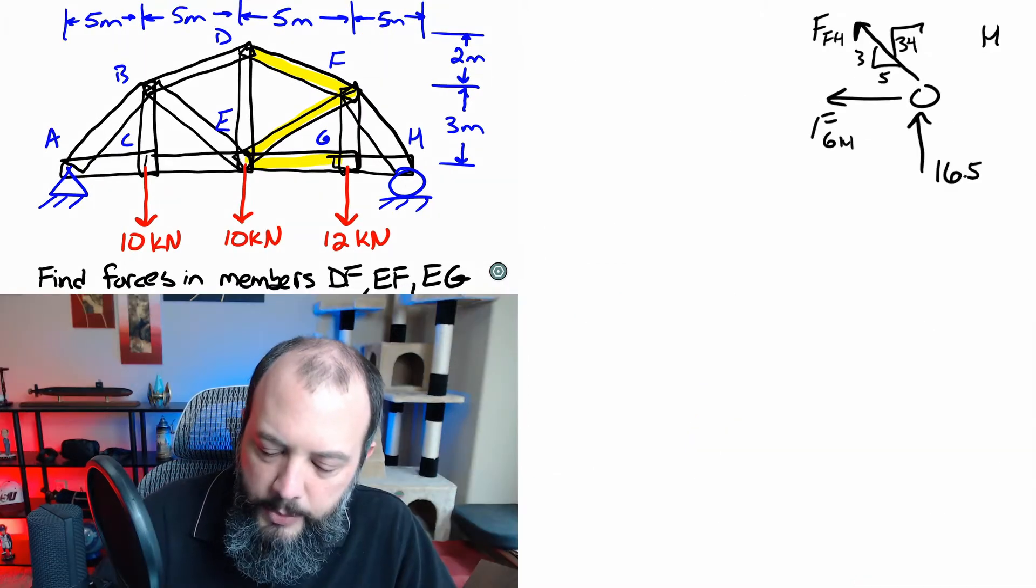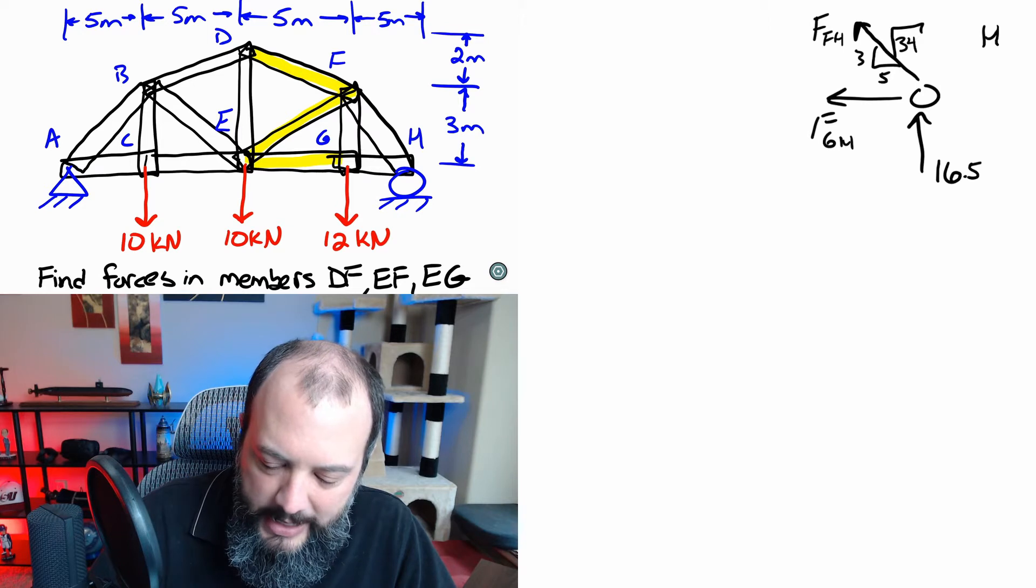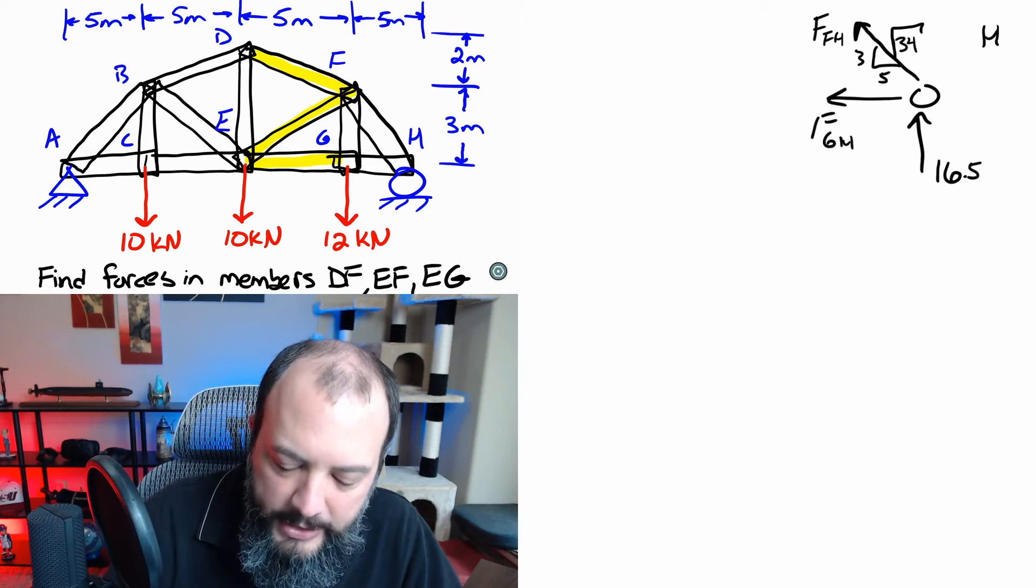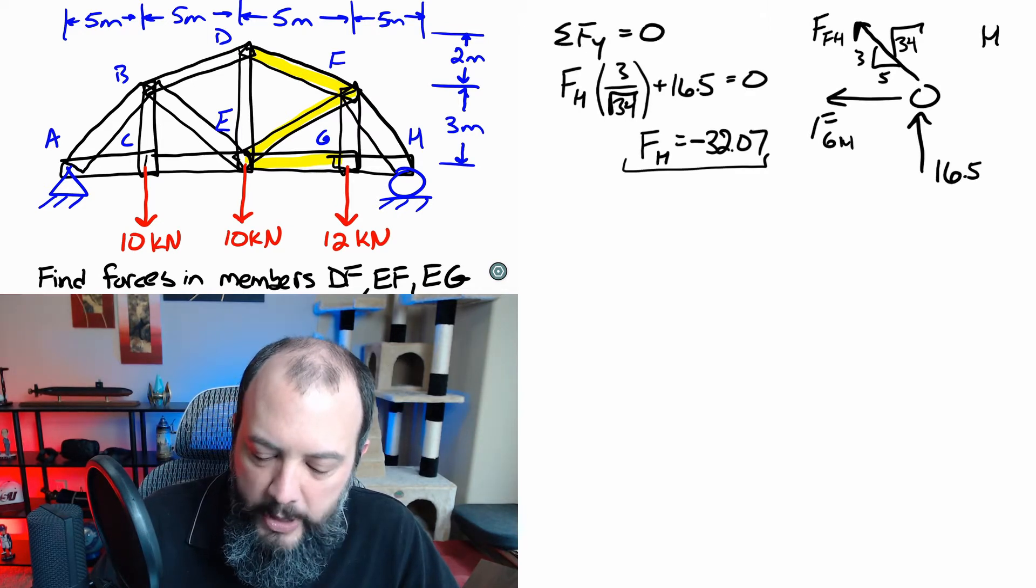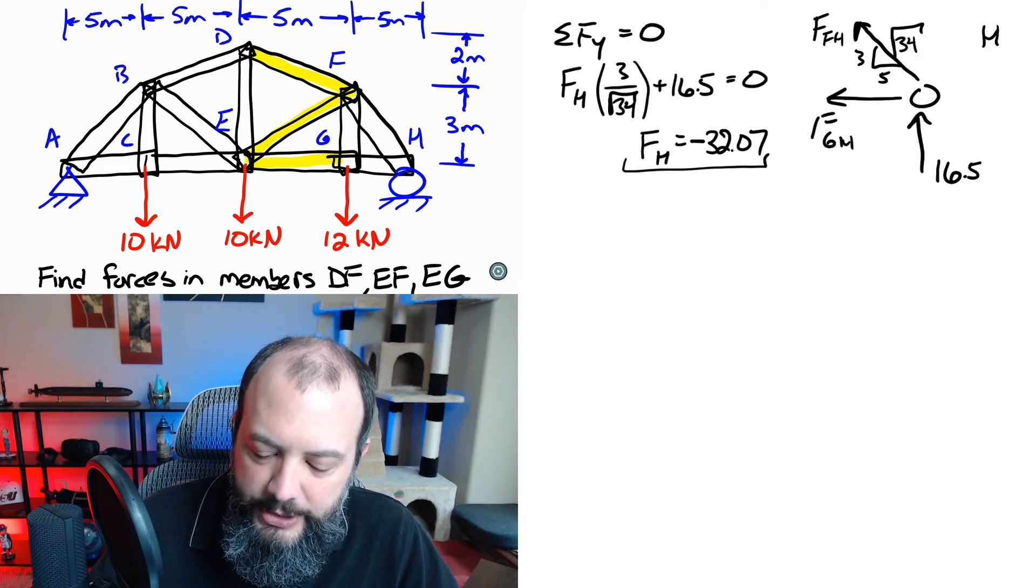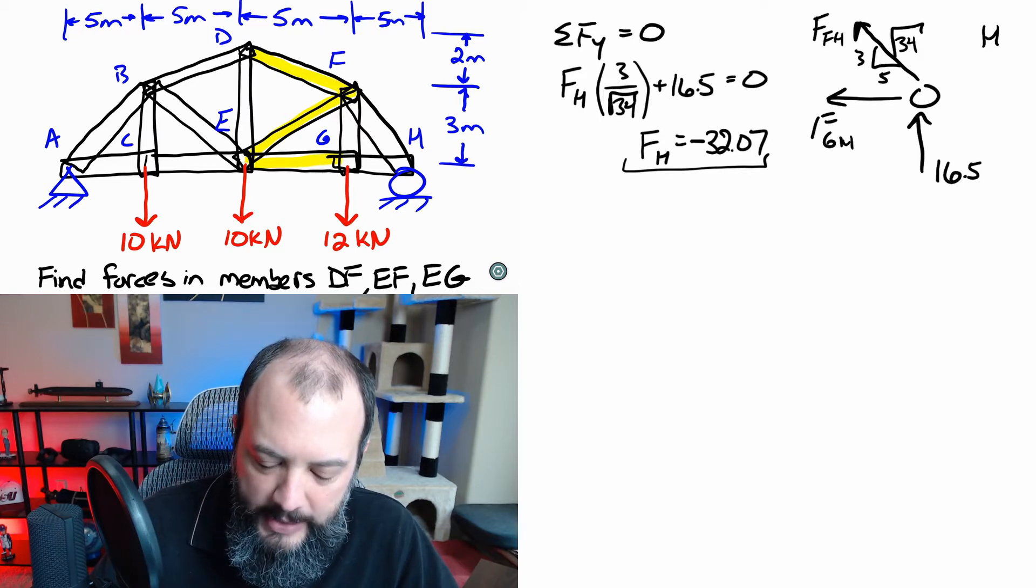So I start off with the free body diagram for point H and then I'm going to add my x direction equation and y direction equations. From the y direction equation we see that FFH is the only unknown. So we can get to a final answer right there.